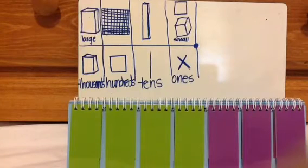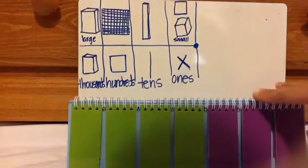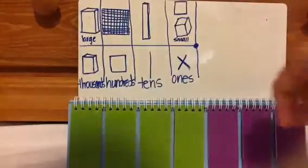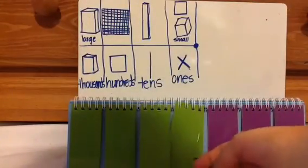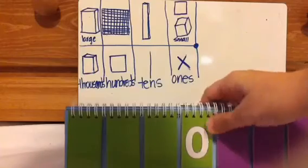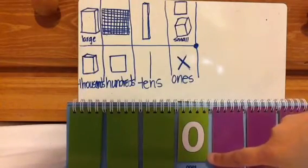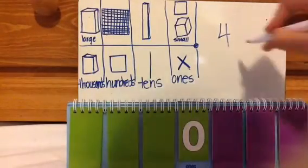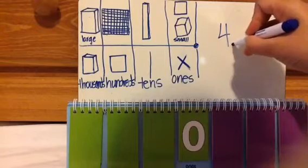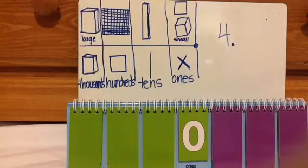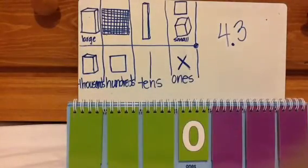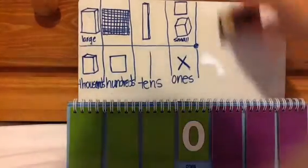Let's get started with the first few place values. Anything in purple is decimals — that's a different video. I'm going to focus only on the green place values. The very first place value is called the ones place. There is an invisible decimal right here, so anytime you see a whole number like 4, you can assume there is a decimal right there — you just don't see it. Whole numbers are usually written without the decimal.